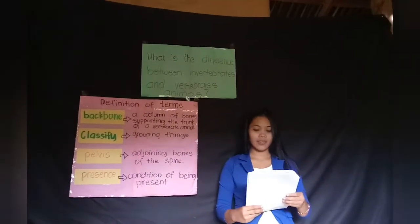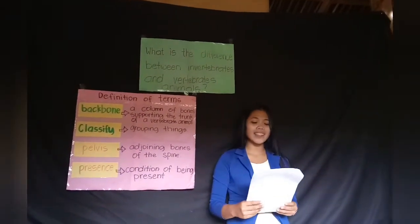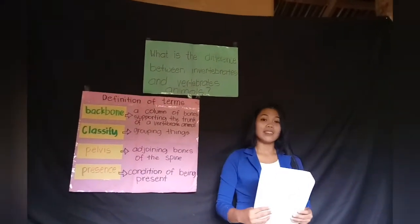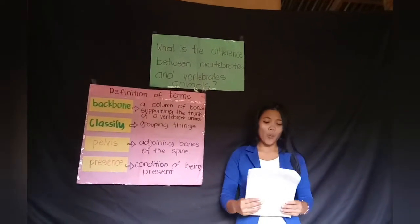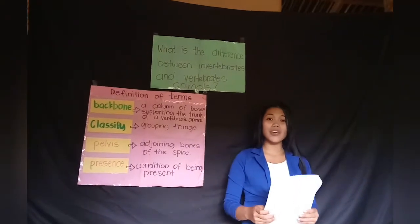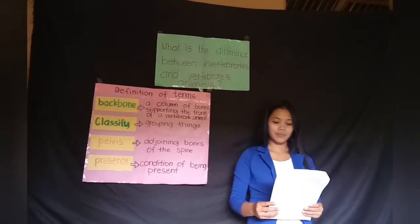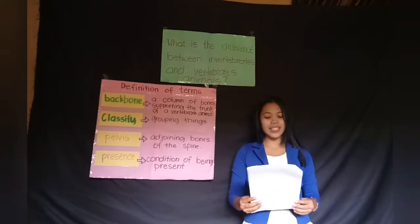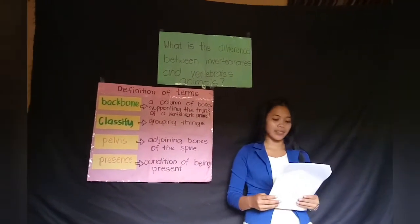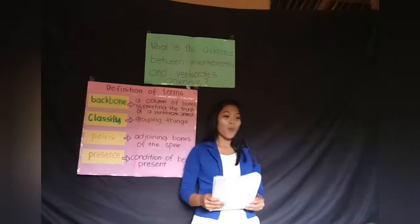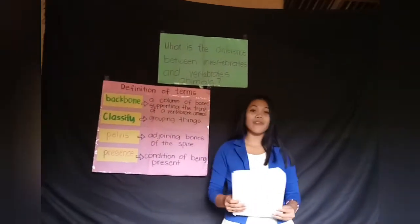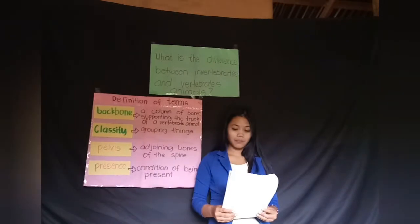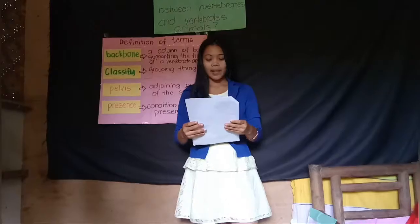Lucien: Jellyfish, ma'am. Very good. What else? Snake. What do you call animals that have a backbone? The animals that have backbones are vertebrates. Very good. Who can give an example of vertebrate animals? Monkey, ma'am. Why is the monkey a vertebrate animal? Because the monkey has a backbone. That's right.